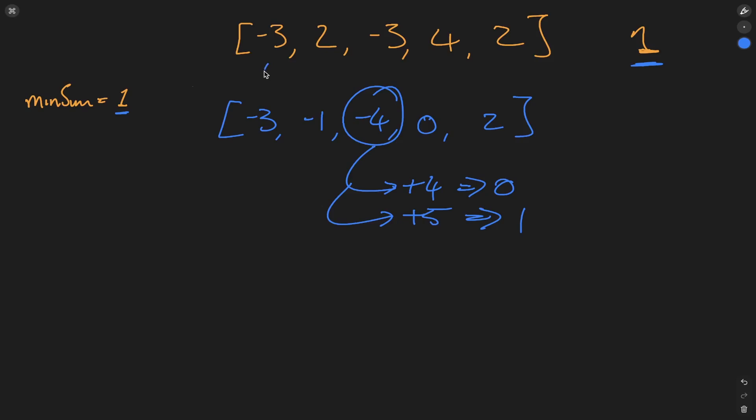We're going to update the minimum sum as we iterate through and add up the values within this array. Let's give it a go. We'll loop through these numbers, add each value to sumUp, and calculate the new minimum. At -3, sumUp goes to -3 and minimum sum is updated to -3. Moving to two.